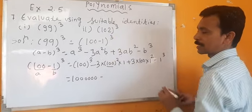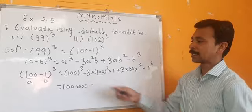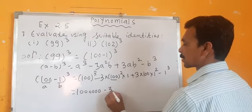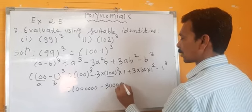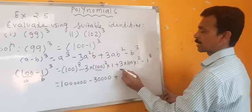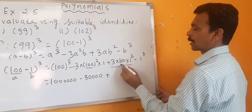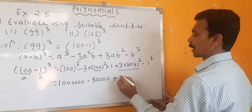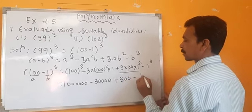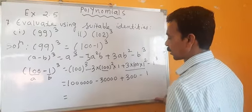100 squared is 10,000. 10,000 into 3 is 30,000. Plus 1 squared is 1, so 1 into 100 into 3 is 300, minus 1.